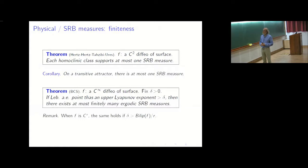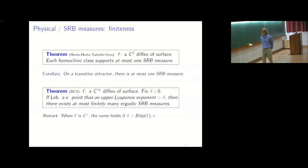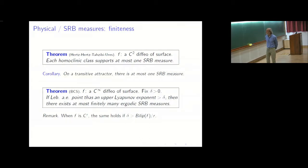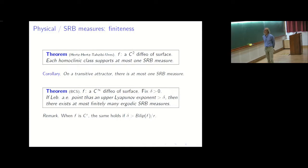If you look at the diffeomorphism globally you may also get a finiteness result. Assume that for some reason you know that Lebesgue-almost every point in the manifold has a Lyapunov exponent bounded away from zero, larger than some constant delta. Then there can exist at most finitely many ergodic SRB measures on your system.